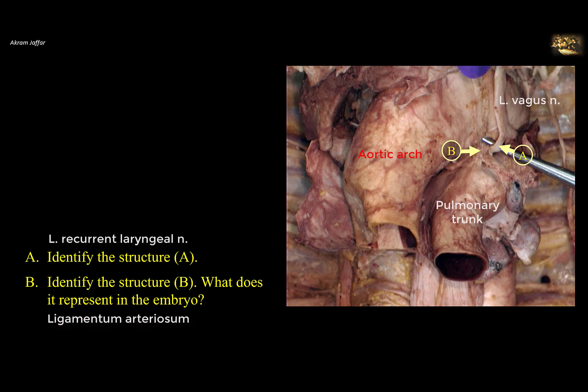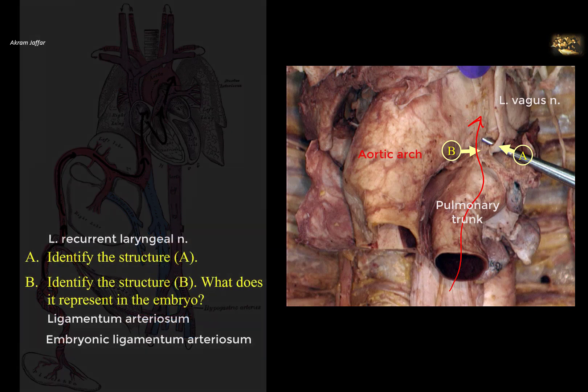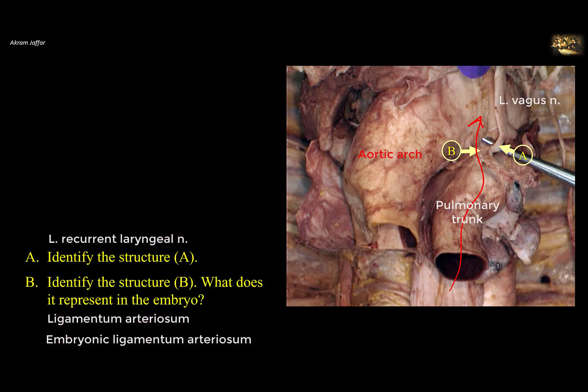The left recurrent laryngeal nerve loops around the ligamentum arteriosum B and ascends after turning under the arch of the aorta to reach the larynx. The ligamentum arteriosum B is a fibrous cord between the arch of the aorta and the pulmonary trunk — it is the remnant of the ductus arteriosus in the embryo. The ductus arteriosus shunts blood from the pulmonary trunk to the aorta, allowing blood to bypass the lungs during development, since the lungs are collapsed and no oxygenation takes place in the embryo. The ductus arteriosus closes soon after birth and forms the ligamentum arteriosum. Failure of closure results in patent ductus arteriosus.